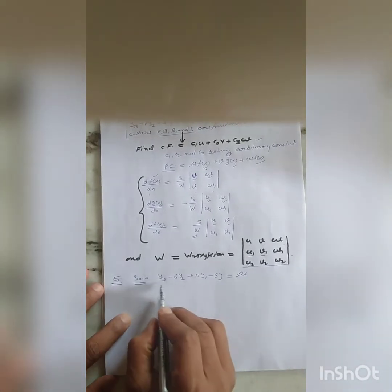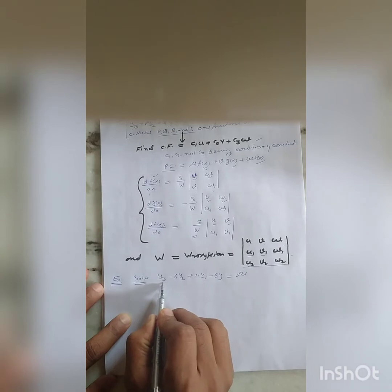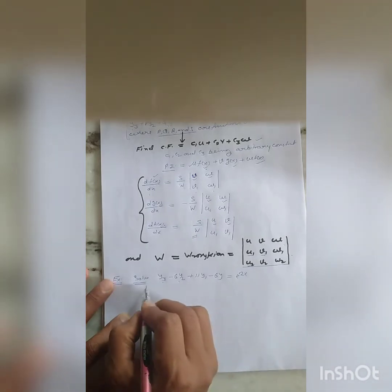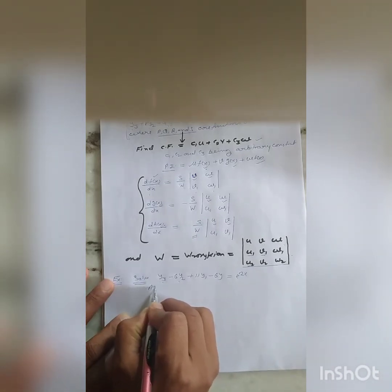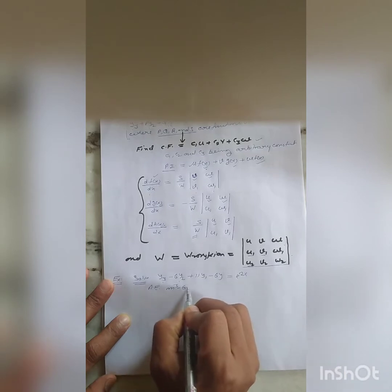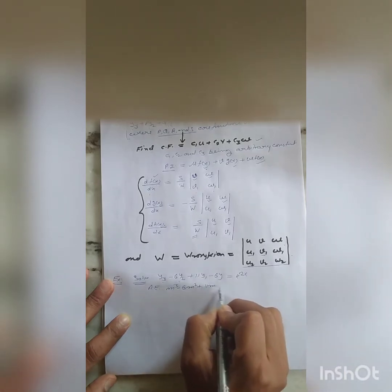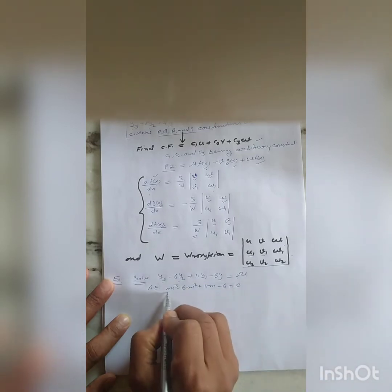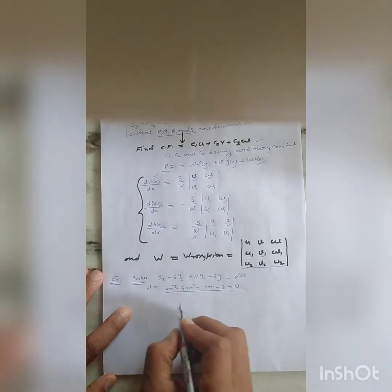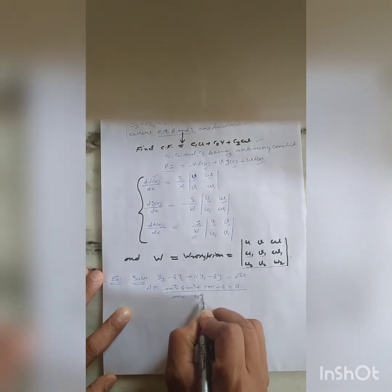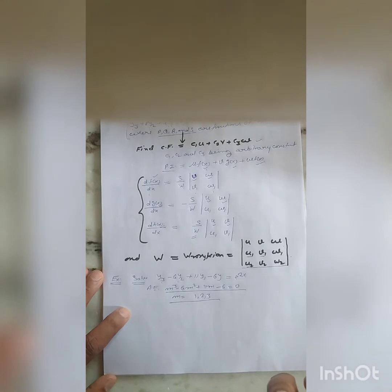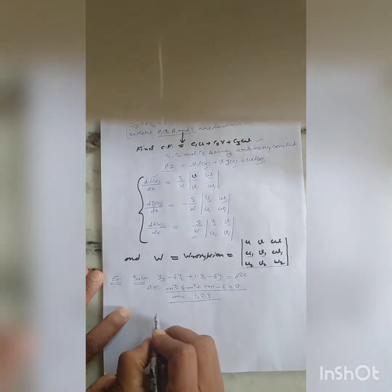The example is the third order differential equation y''' - 3y'' + 11y' - 6y = e^(2x). First we calculate the auxiliary equation: m³ - 6m² + 11m - 6 = 0. Finding the roots of this equation, the roots are 1, 2, and 3.